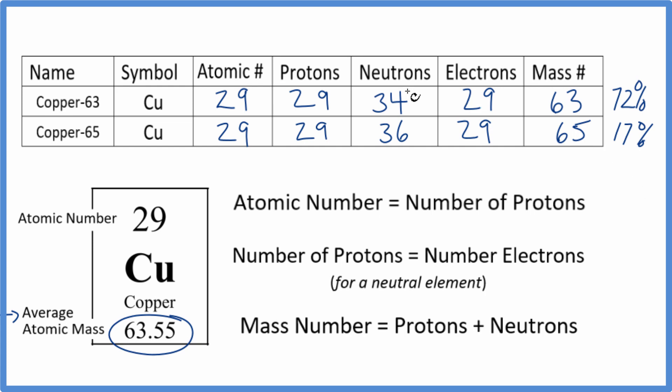So again, usually you'll be given neutrons or a mass number and asked to figure the other things out. If you're not, for many elements you can just round it up. With copper, it's a little more difficult because it's right down the middle. So I don't know if I would recommend that in this case.